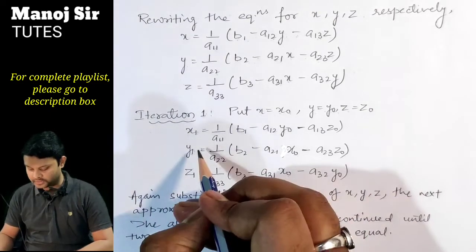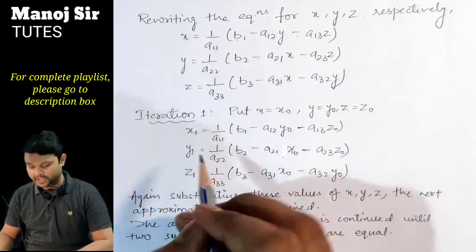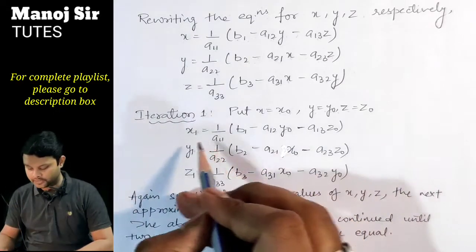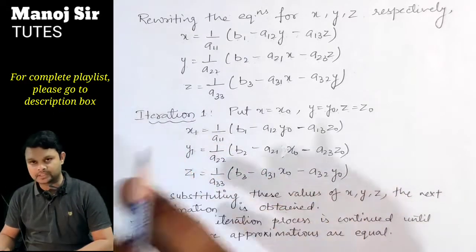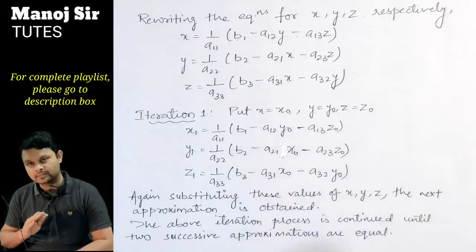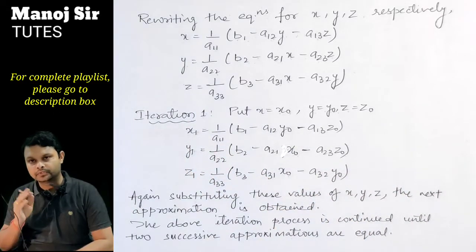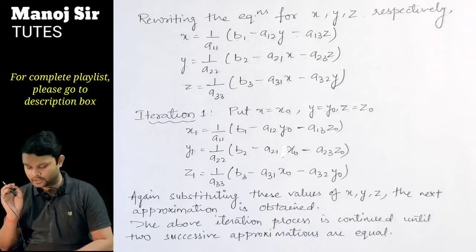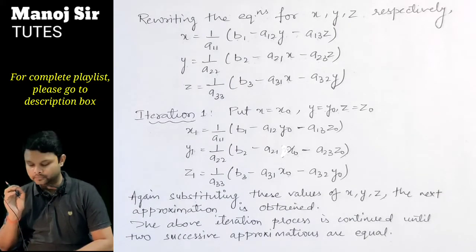For example, if at the fifth and sixth iteration the values of x, y, and z match, we say those values are our solution. Now with the help of a problem we will discuss this method in detail.